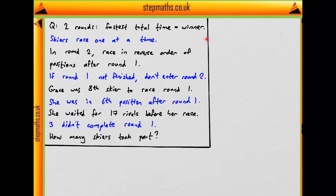We have a lot of information and we need to make sure we're using the right stuff. We know Grace was the eighth skier to race in round one and she was in sixth position after round one. But which of these do we need to use in the rest of the question?